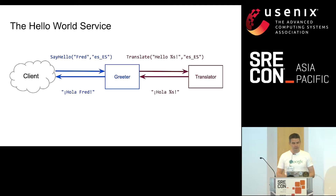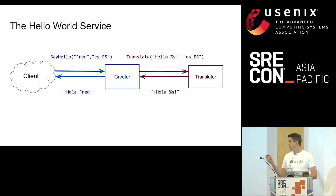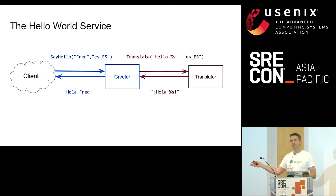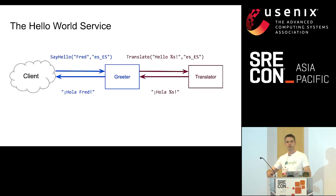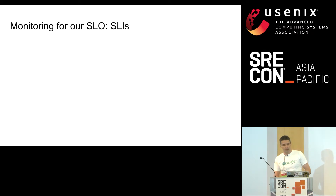The Hello World service — it's a lovingly over-engineered trivial service. A client asks the service to say hello, providing the name and locale. The greeter service goes to the translation backend to fetch the translation. The translator responds with the localized string pattern, and the greeter uses that to respond to the client. The point is that queries come in, requests go out, responses come in, and your responses go back. This pattern applies everywhere. We'll focus on the greeter in this talk.